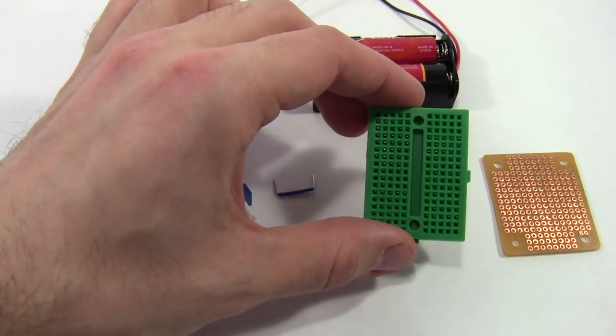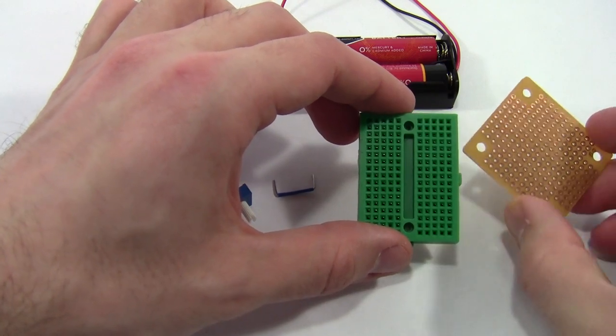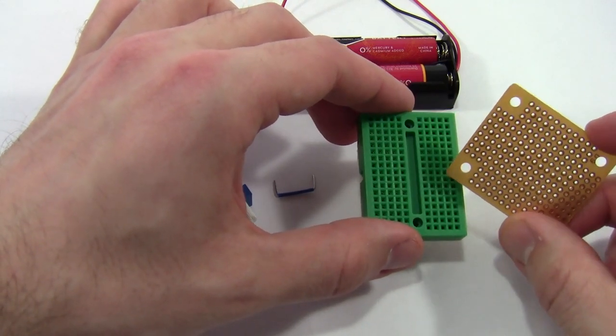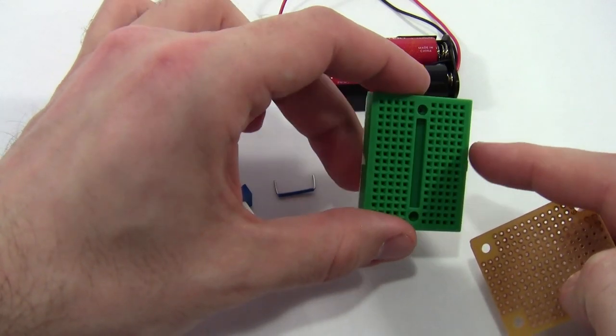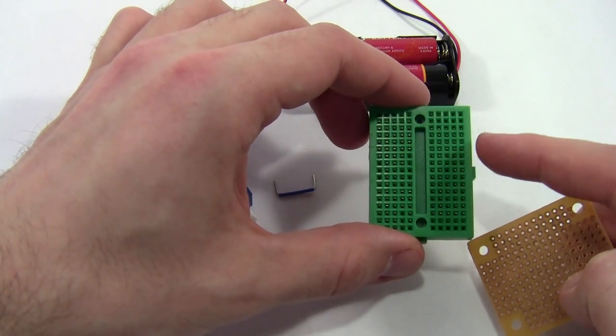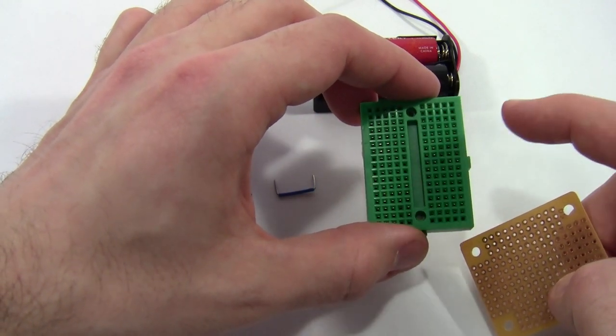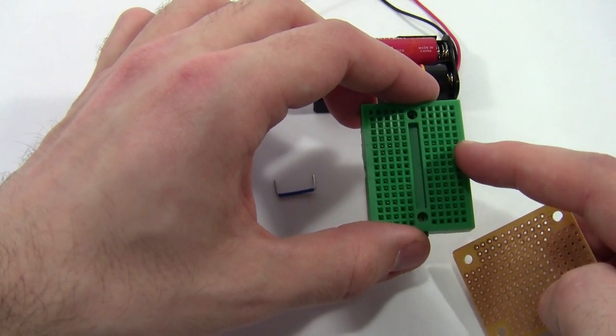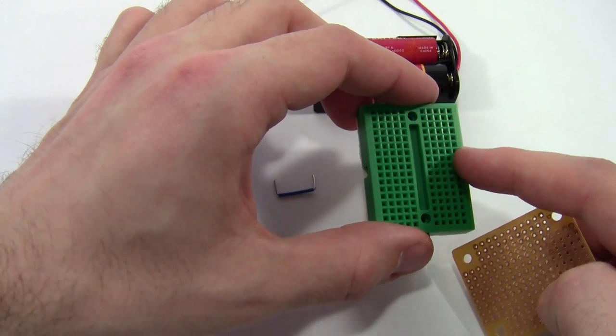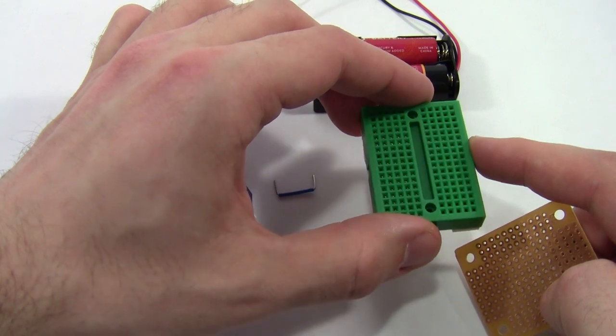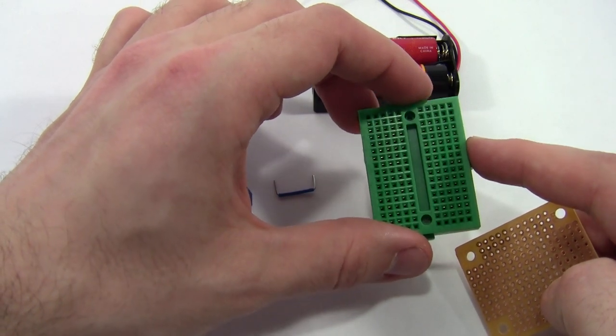You're going to need either a solderless breadboard or a protoboard. If you're just starting out with electronics, I definitely recommend going with the solderless breadboard. This makes prototyping and undoing things if you make a mistake a lot easier. If you don't know how to use a breadboard, check out the links below. We have a great breadboard tutorial that will get you up to speed on what these are and how they work and how you build circuits with them.